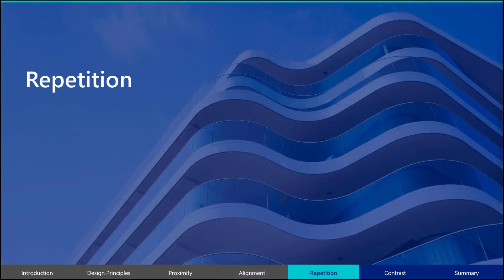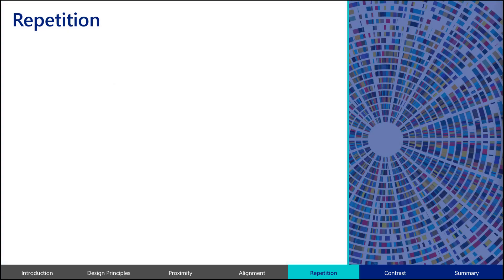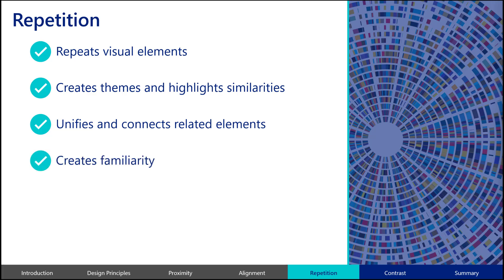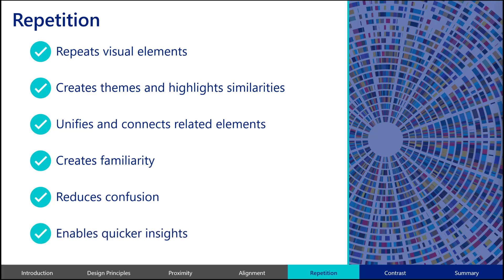A third principle of design relevant to data visualization is repetition. Repetition is the practice of repeating similar visual elements throughout your report or dashboard to create themes and highlight similarities. Human brains love patterns, and repetition unifies and connects what may appear to be disparate elements of the visualizations but are in fact related. Consistent repetition creates familiarity and helps your audience locate relevant information quickly. Representing the same thing in different ways causes confusion for your audience. Repetition reduces confusion and leads to quicker insights.